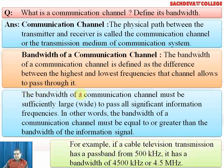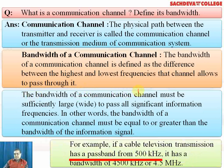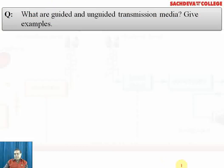For example, if a cable television transmission has a pass band from 500 kilohertz, it must have a bandwidth of 4500 kilohertz, that is 4.5 megahertz.